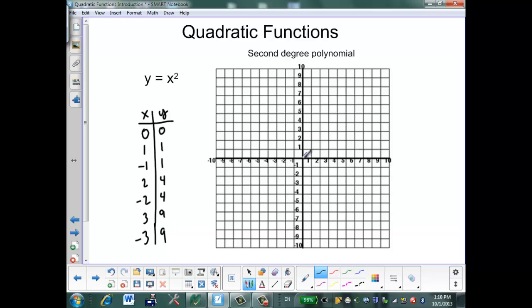Now I'm going to graph this on my axis. So 0, 0, over 1 up 1, over 2 up 4, over 3 up 9. And I'm going to do the same thing on the other side. Negative 1, 1. Negative 2, 4. Negative 3, 9.